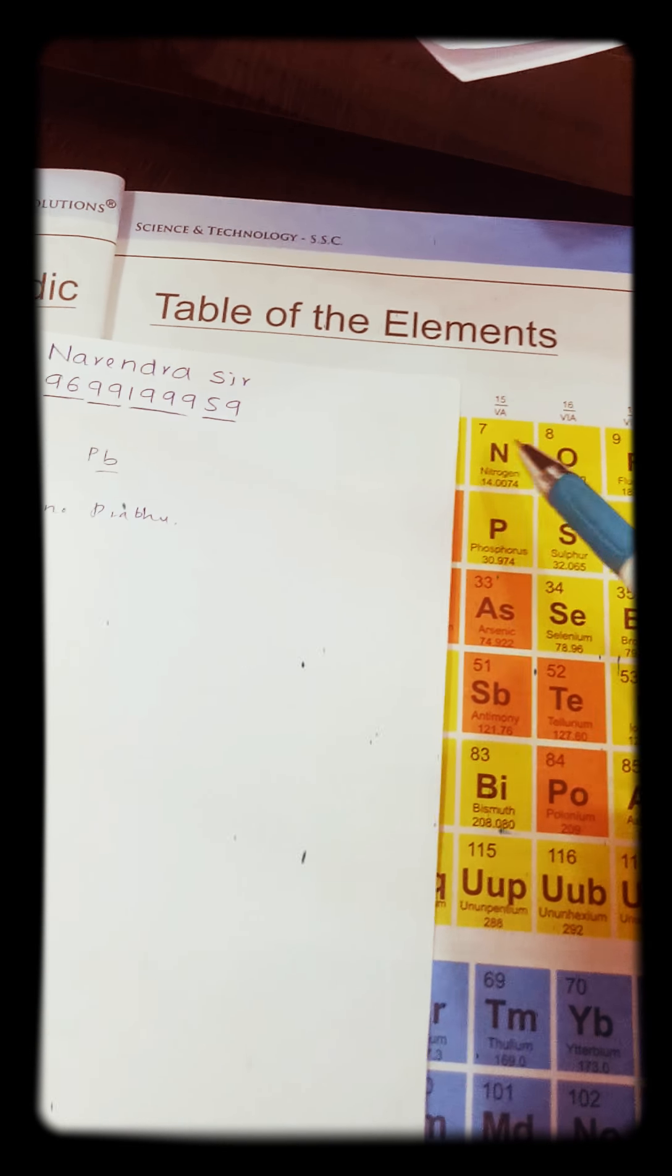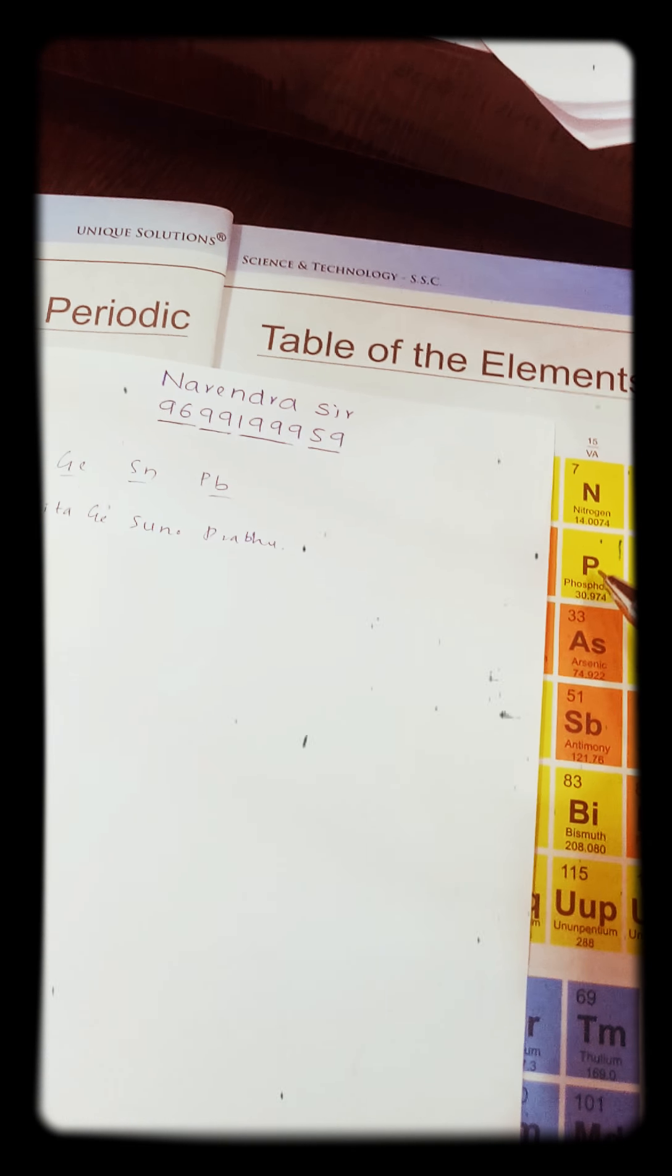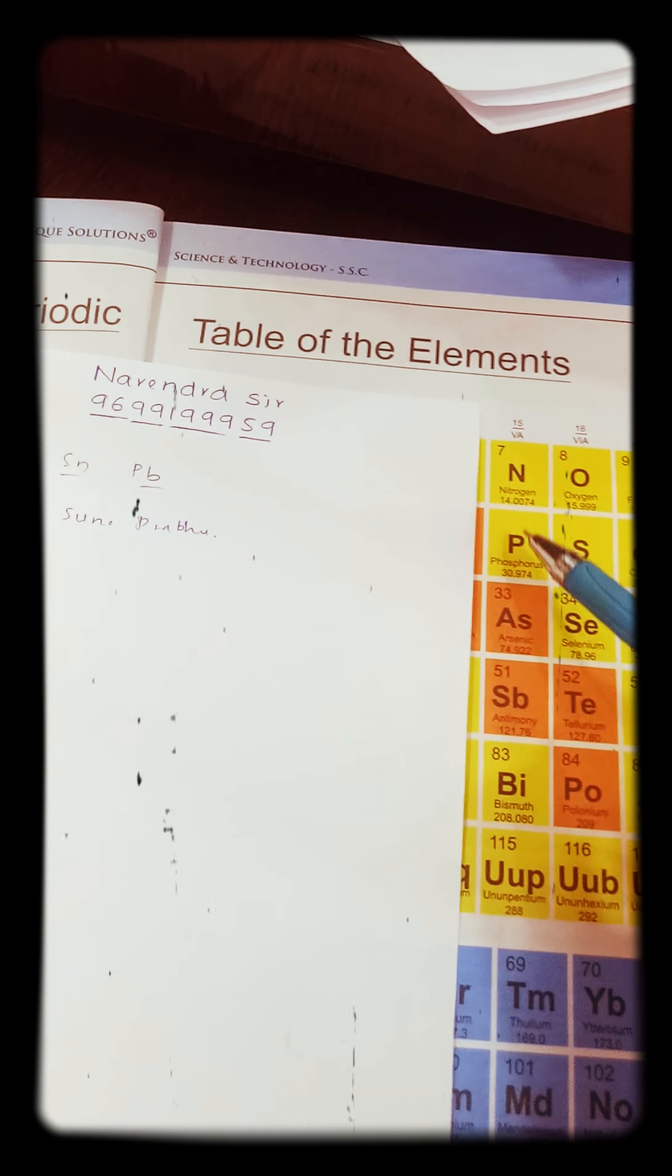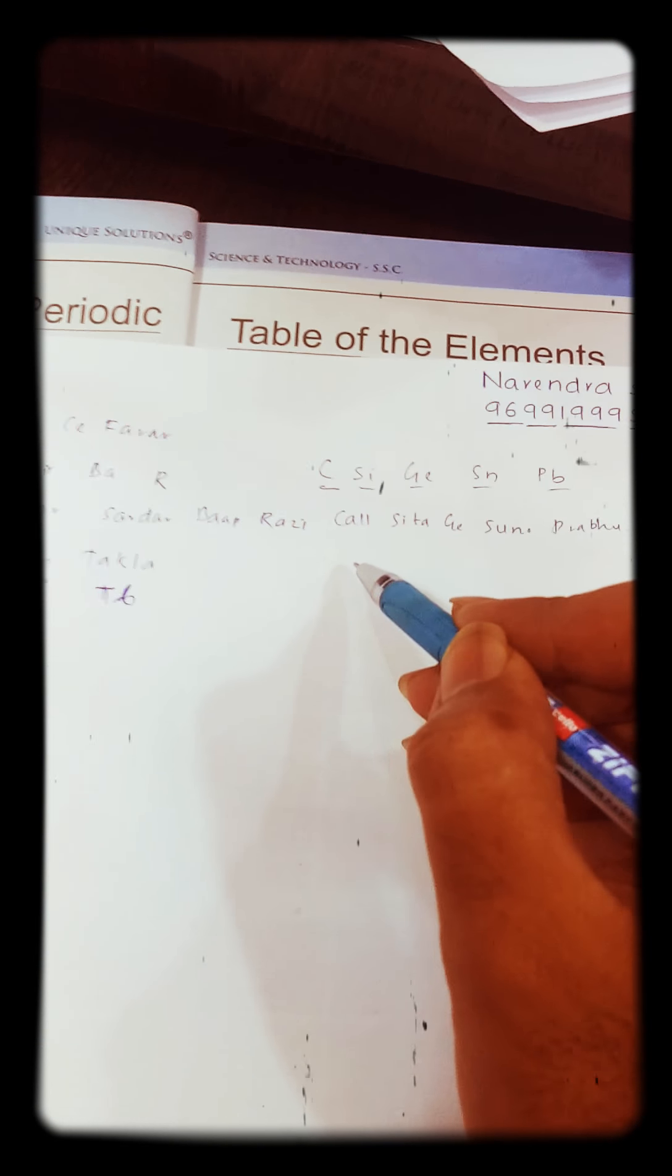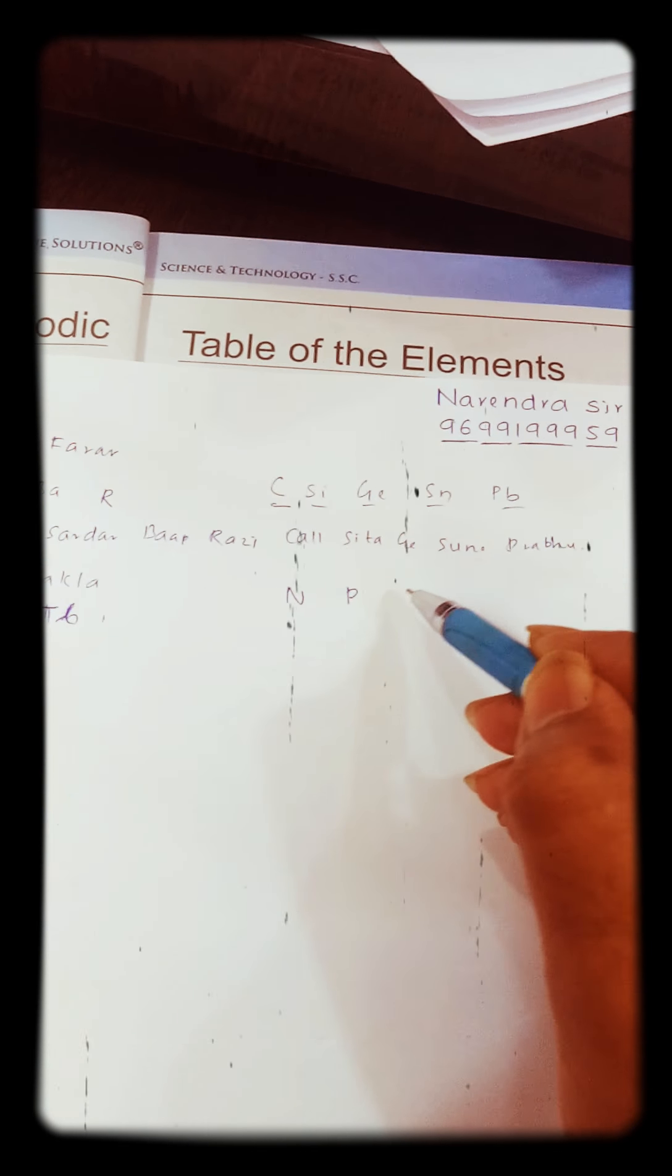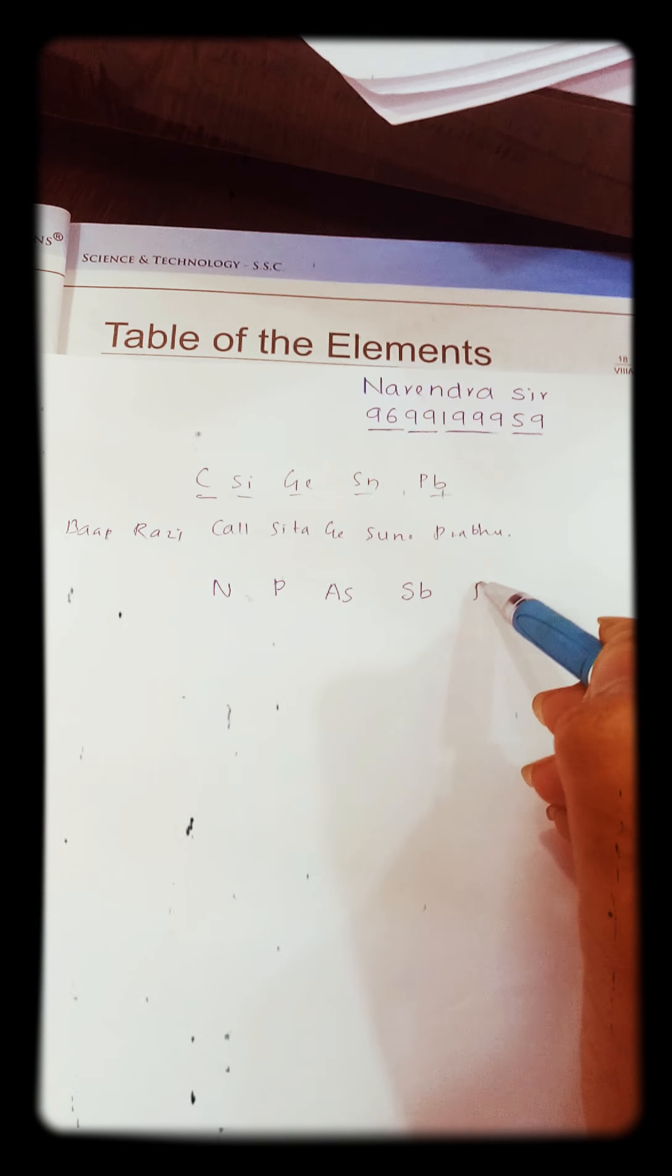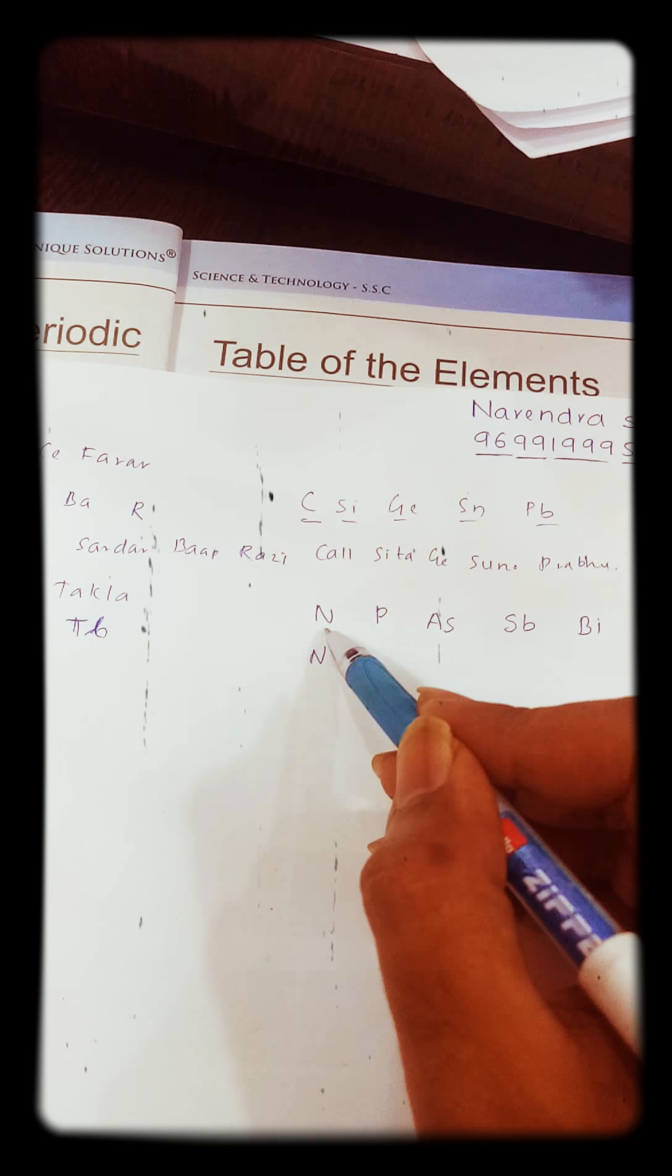Let's come to the next group and here it is your 5th A group or 15th group you can say. Nitrogen, Phosphorus, Arsenic, Antimony, Bismuth. The simple shortcut is New Zealand, Pakistan, Australia, Sabhi, Bikari. It's just a funny thing to remember it very easily: New Zealand, Pakistan, Australia, Sabhi, Bikari.